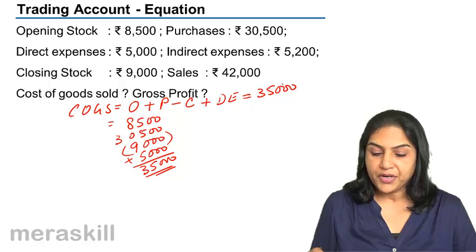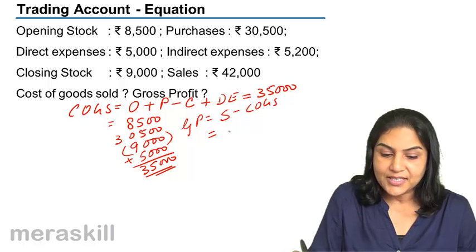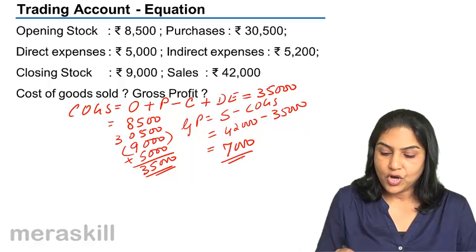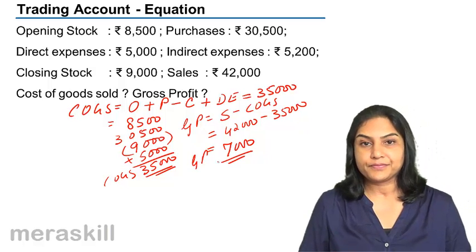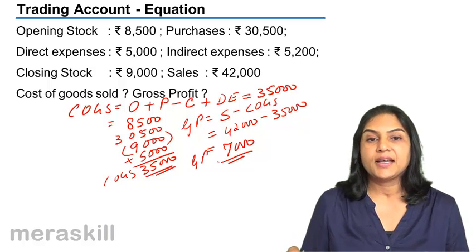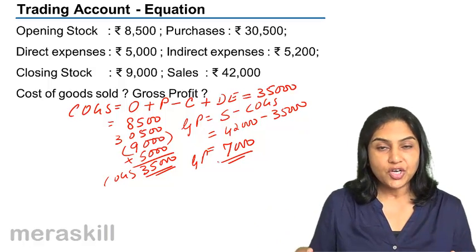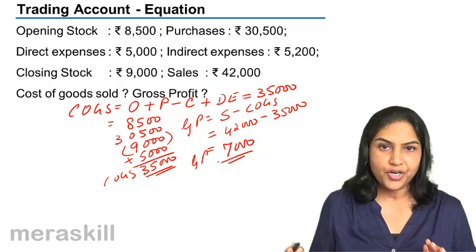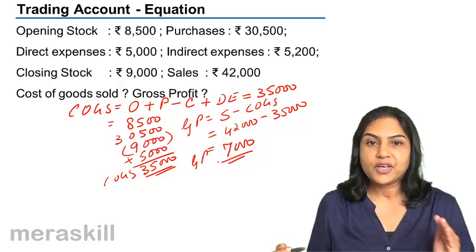What is the gross profit? Gross profit is sales minus cost of goods sold: 42,000 minus 35,000 equals 7,000. So cost of goods sold is 35,000 and gross profit is 7,000. This is how we ascertain gross profit through the equation: sales minus cost of goods sold, where cost of goods sold is opening stock plus purchases minus closing stock plus direct expenses.